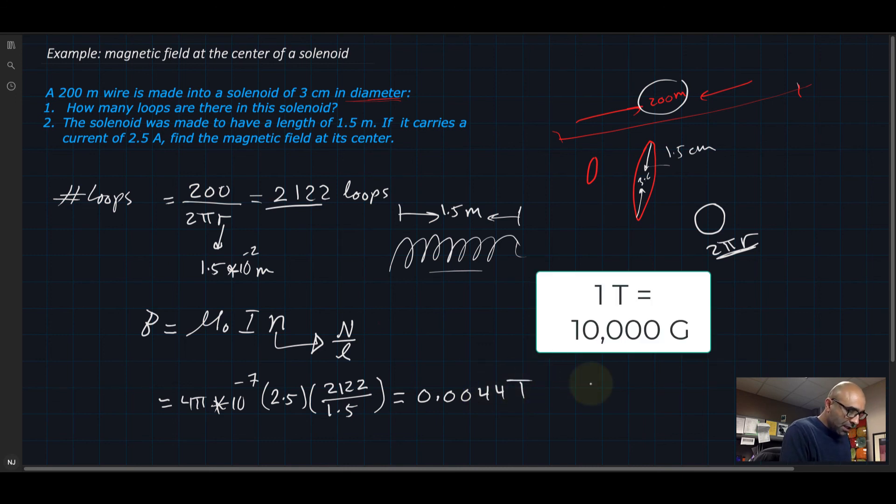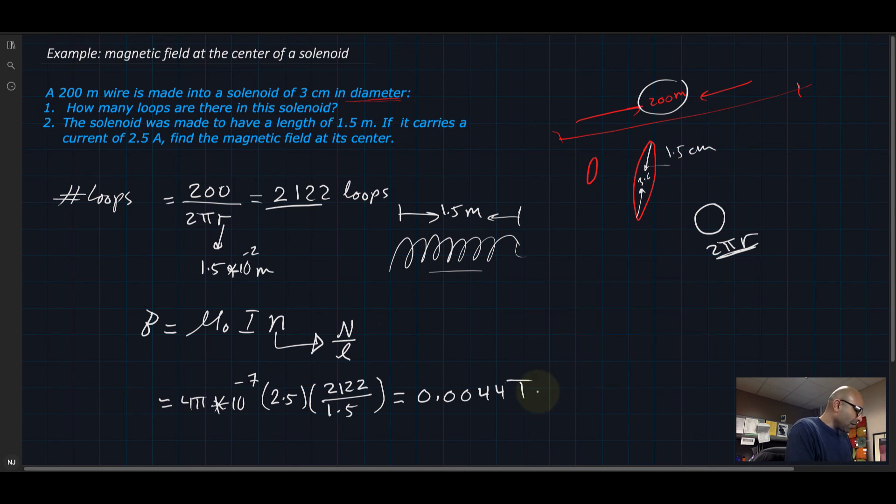And if we want to find this in Gauss, we multiply this by a thousand. So that's equal to 44 Gauss.